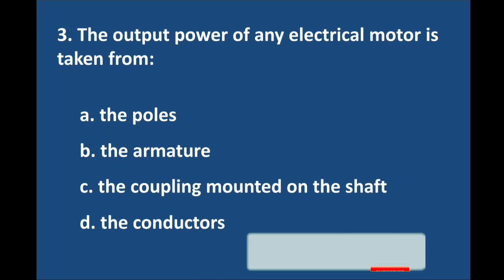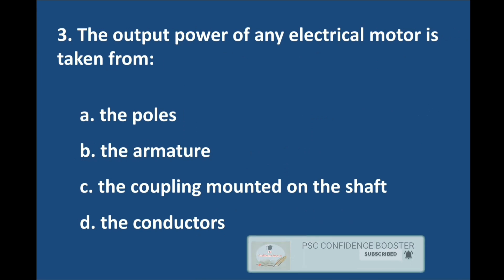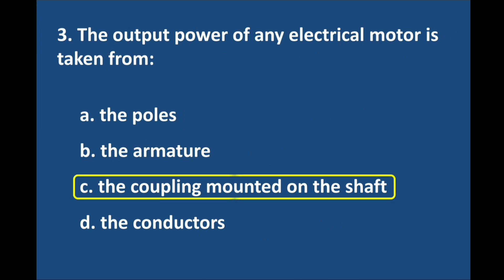Question number 3. The output power of any electrical motor is taken from? Answer is option C: Coupling mounted on the shaft.